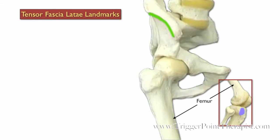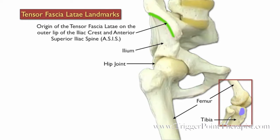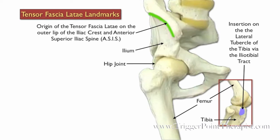Here are the landmarks for the tensor fasciae latae: the femur, the tibia, the hip joint, and the ilium. The TFL originates on the outer lip of the iliac crest and on the anterior superior iliac spine, also known as the ASIS. The TFL inserts on the lateral tubercle of the tibia via the iliotibial tract.